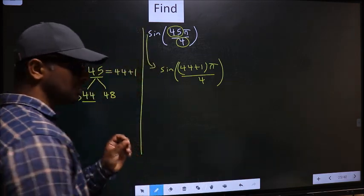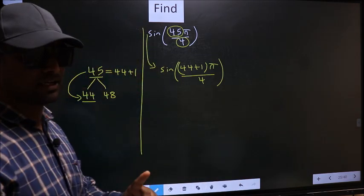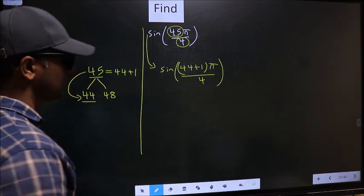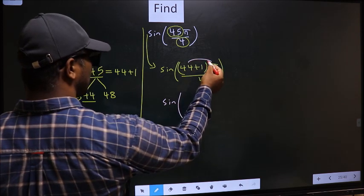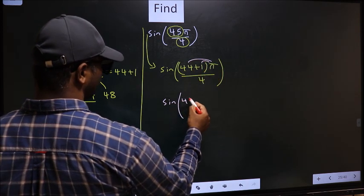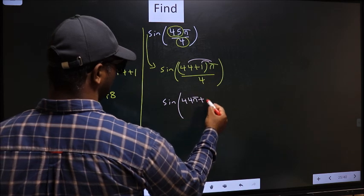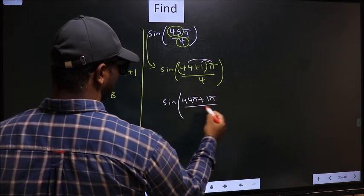This is your step 1. Next, sin. Now, here you open up the brackets. So, you get 44π plus 1π by 4.